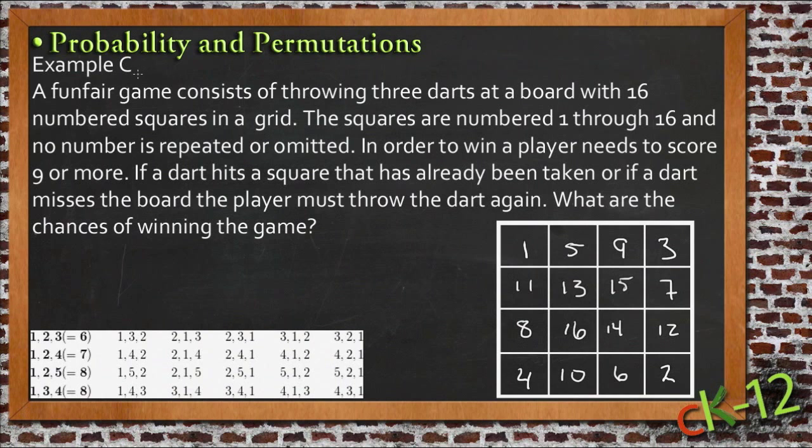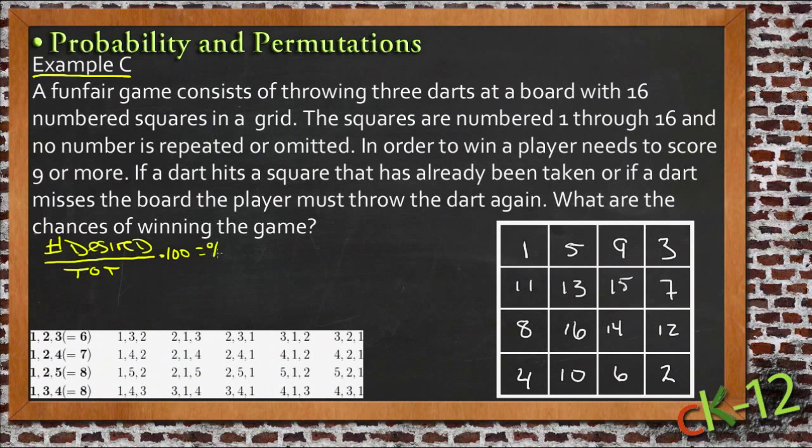Example C brings up an interesting situation with calculating probability and permutations. Usually what you do to calculate probability of something happening is to take the number of desired outcomes and divide it by the total number of outcomes, then multiply by 100 to get the percent of the desired outcome happening.